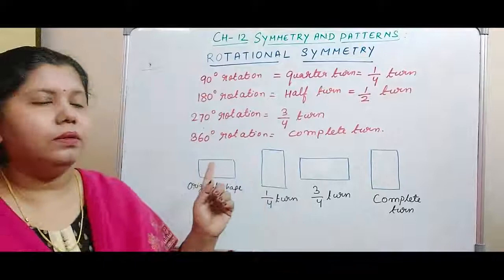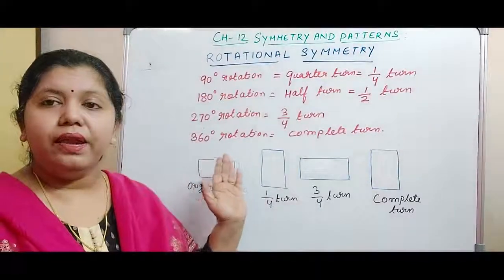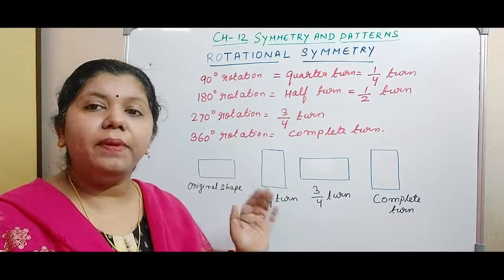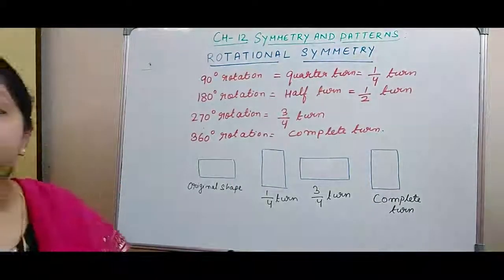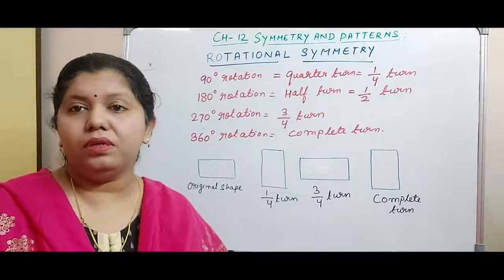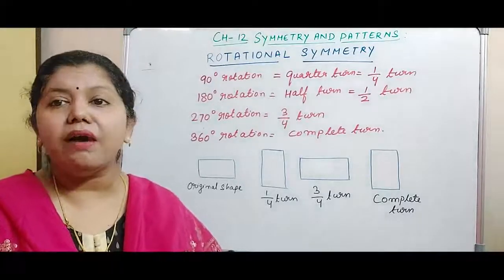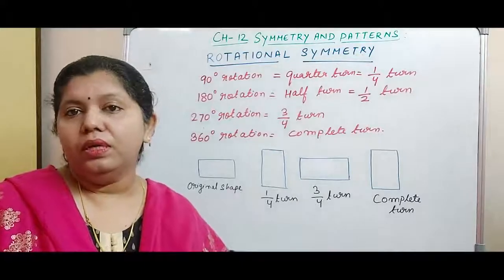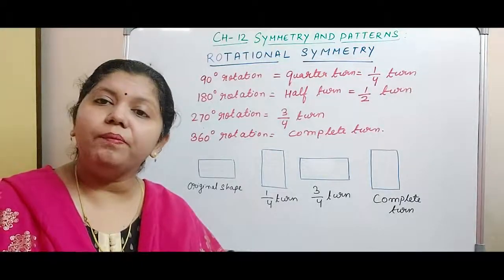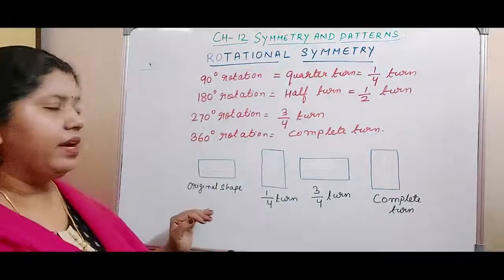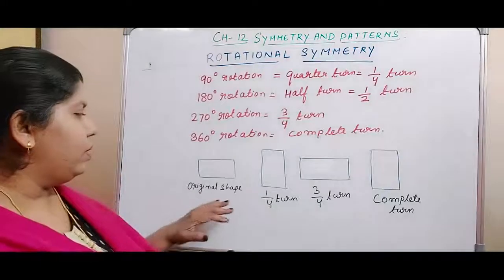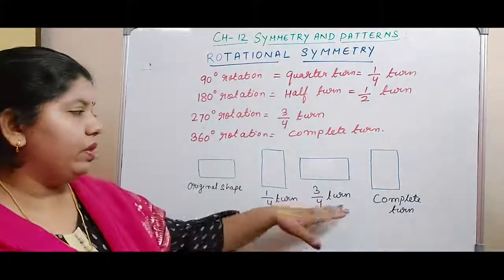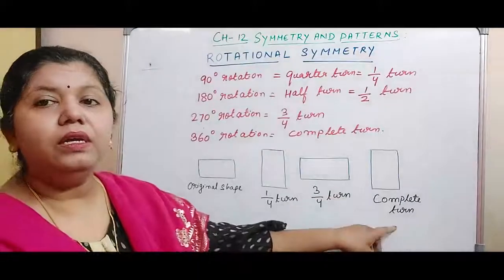Now look at particular degrees of rotation and what we call them. A 90 degree rotation is called a quarter turn or 1/4 turn, because 90 degrees is one-fourth of 360 degrees. Similarly, 180 degrees is a half turn because 180 degrees is half of 360 degrees. 270 degrees is a 3/4 turn, and 360 degrees is the complete turn. Let us look at a rectangle — its original shape is this. At 1/4 turn it looks like this, at 3/4 turn it looks like this, and at complete turn it looks like the original.